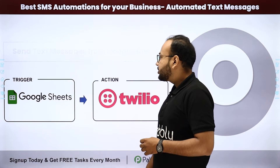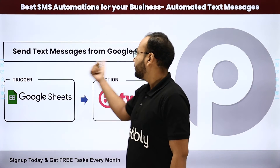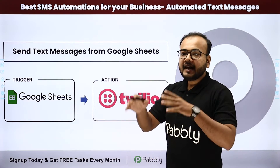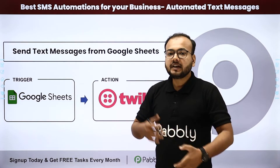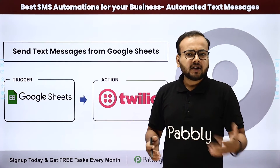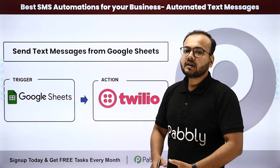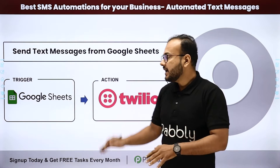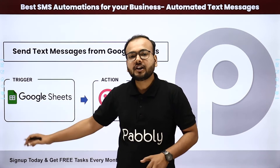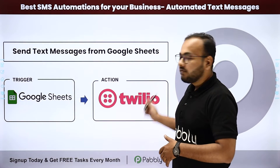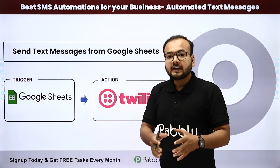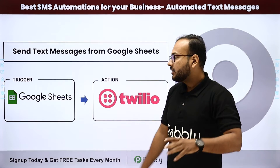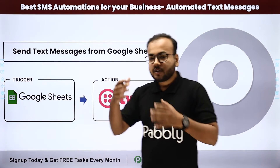The next automation is sending text messages from Google Sheets. Here, you just have to create a spreadsheet and fill in some pre-created messages — any kind of messages. You can schedule the delivery of those messages, or as and when you add an SMS in a new row in the spreadsheet, it can be delivered via Twilio automatically. You can send any kind of SMS and keep a record of those messages in your spreadsheet.